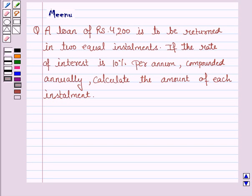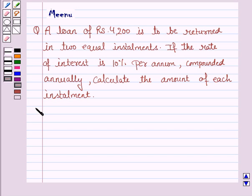Hello and welcome to the session. Let's work out the following problem. A loan of rupees 4200 is to be returned in two equal installments. If the rate of interest is 10% per annum compounded annually, calculate the amount of each installment. Let's now move on to the solution and let the amount of each installment be equal to rupees x.